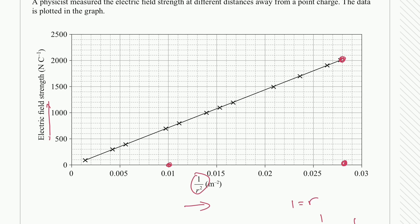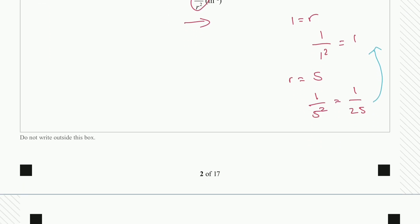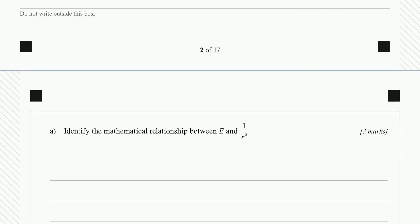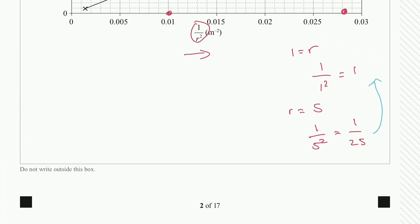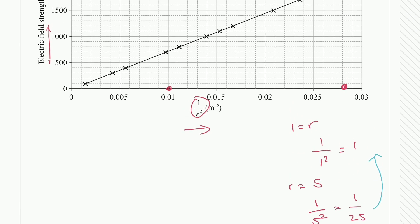Now let's continue on and have a look at what the question's specifically asking us. So identify the mathematical relationship between E and 1 over r squared. So I'm going to write my answer up on this portion.